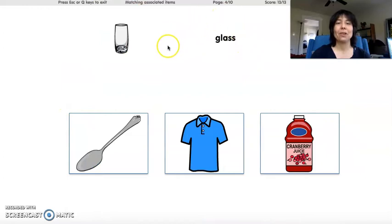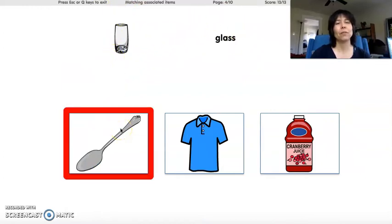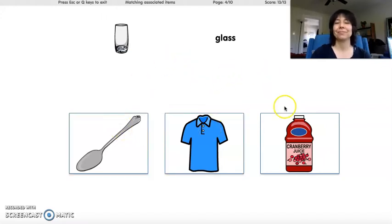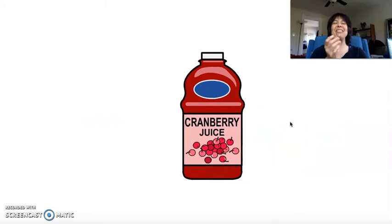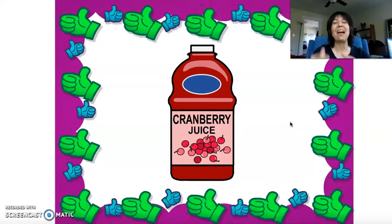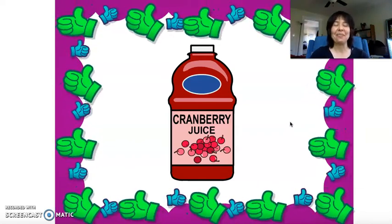What goes with the glass? A spoon? A shirt? Juice? Yes! Juice and glass go together. You pour the juice in the glass. Good job! Good job!